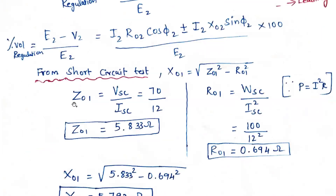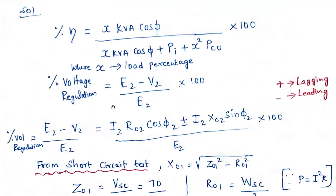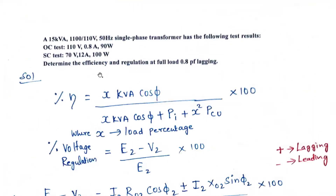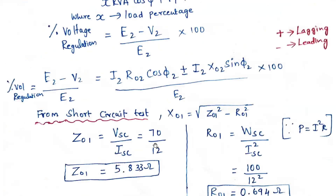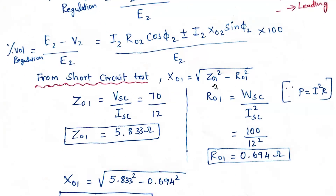From the short circuit test we can calculate the impedance. Z₀₁ equals V_SC divided by I_SC. V_SC is 70 volts and I_SC is 12 amperes, so Z₀₁ equals 5.833 ohms.